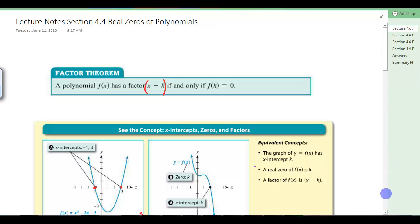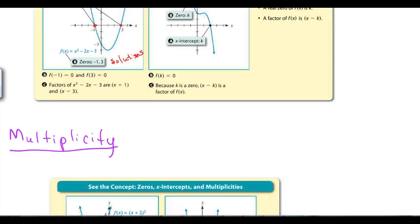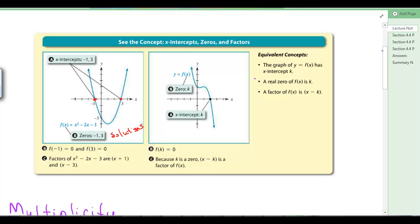Let's look at these concepts next. It talks about x-intercepts, zeros, and factors. The x-intercepts here are at negative 1 and 3. Those are also called the zeros or the solutions to this equation. f of negative 1, the y value is 0, f of 3, the y value is 0. Anytime you have x-intercepts, the y value will be 0. The factors are written as x plus 1 and x minus 3. Same concept is shown here without any numbers. You've got some function f of x. This is an x-intercept k. f of k is equal to 0. And because k is a 0 or a solution, x minus k is a factor.